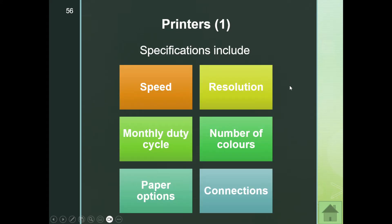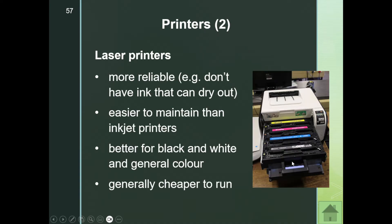Now we have our printers. With printers there are certain specifications: speed, resolution, monthly duty cycle, number of colors, paper options, and connections. Here, for example, is a color laser printer. I can see it has black toner and, similarly to an inkjet printer, three main colors that make up all the colors needed — cyan, yellow, and magenta. I identify this as a laser printer because I can see the fold where the paper comes out.